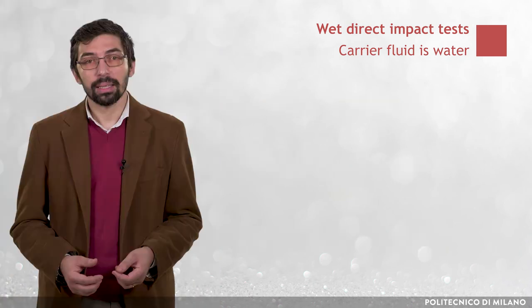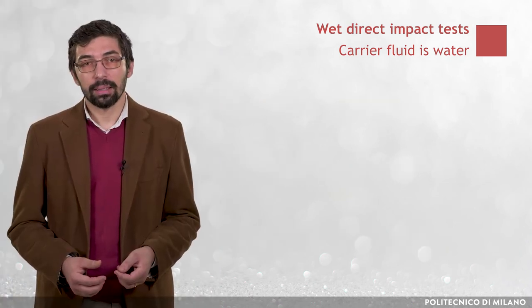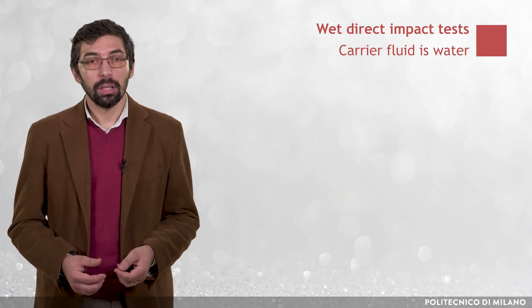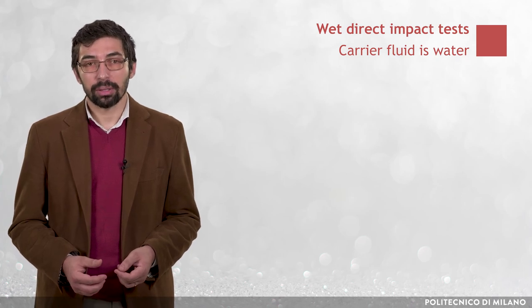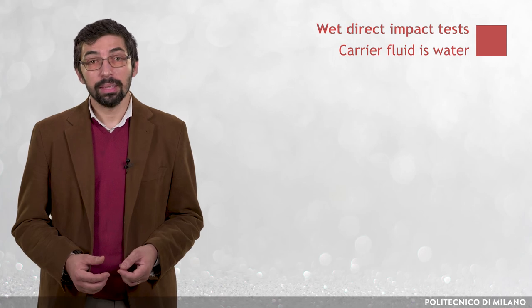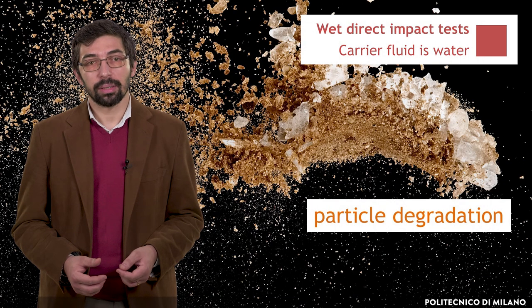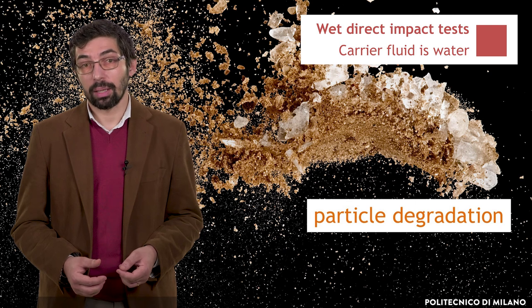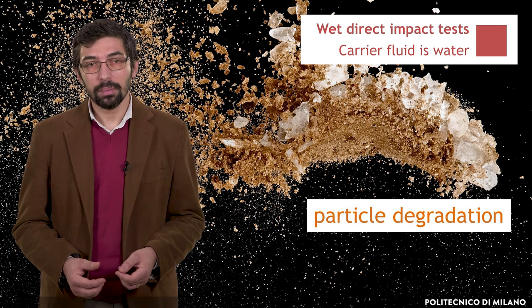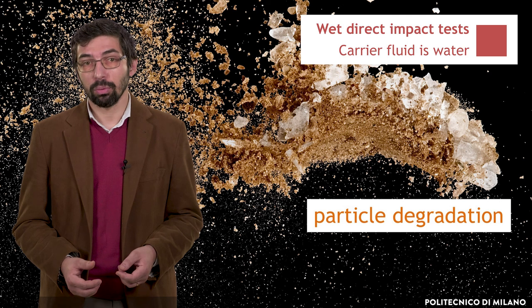Unlike dry direct impact tests, wet tests involve the recycled use of the particles, which recirculate in the loop. This might produce particle degradation — that is, the particles tend to become smaller and more rounded. This adverse effect should be taken into account when processing the experimental data.